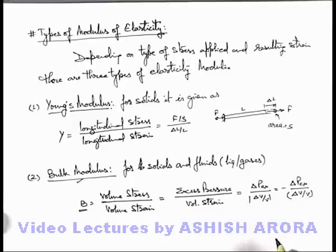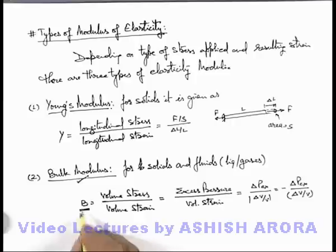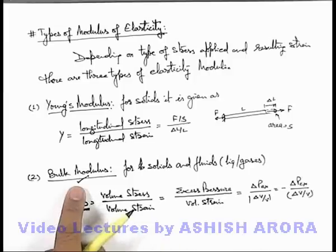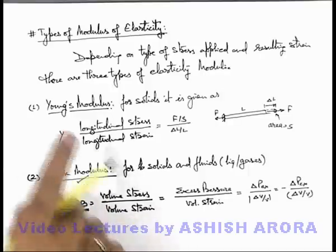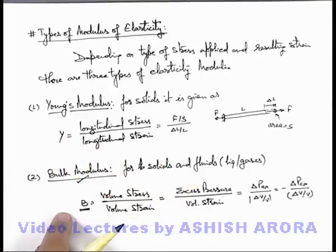This is the way how we define. As it is a modulus it can never be negative, it is just the magnitude of a factor which accounts for the response of a material against external forces, how elastic the material is. So this is the bulk modulus which accounts for volume strain and Young's modulus accounts for longitudinal strain. There is one more kind of modulus of elasticity, shear modulus.